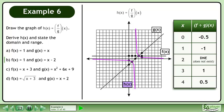We can now draw the graph of h. Note that we have a vertical asymptote at x equals 2 and a horizontal asymptote at y equals 0.